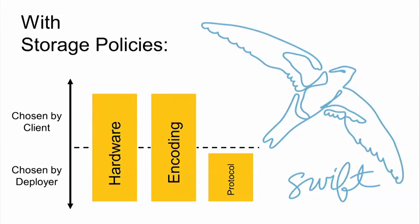Looking at the diagram, the client now has a selection of things, as does the operator, from two different perspectives. There are different things you can tune: you can choose your hardware — primarily a deployer thing, but the client has a say as well. You can choose your encoding, and policies will allow something like erasure code to come into the picture — and it is coming right after policies. And then your backend disk protocol as well. Combining storage policies and disk file gives you an incredibly modular and extensible system.